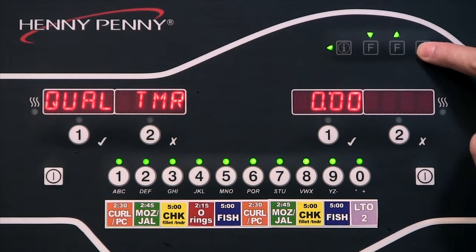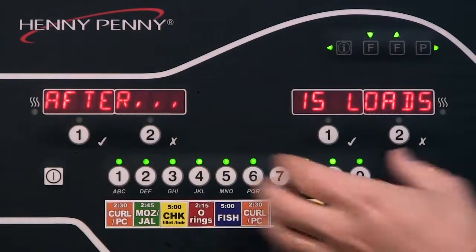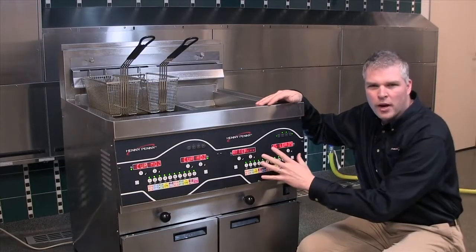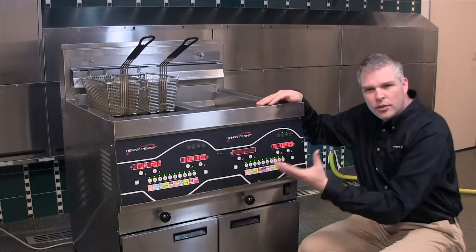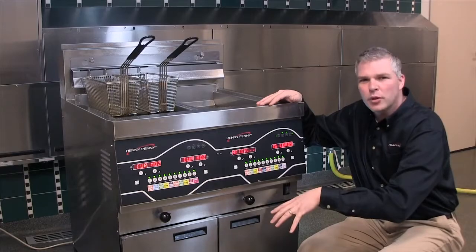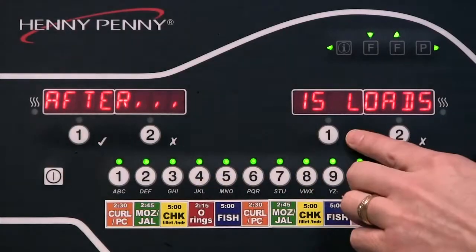Quality timer we'll keep at 0. Filter after. This is the number of drops before the fryer is going to request a quick filter. The messier the product, the more crumbs and breading that falls off, usually the more often you want to filter. This one we're going to leave at 15.